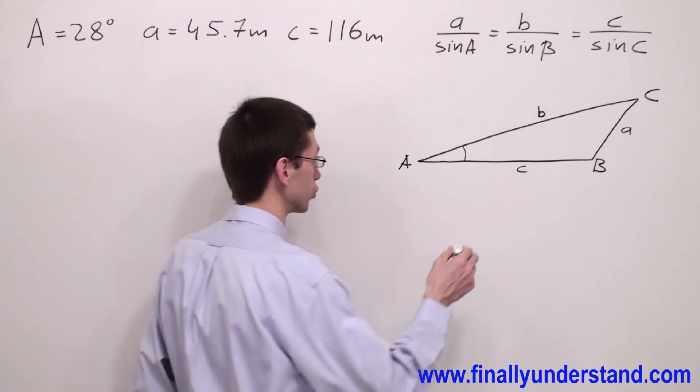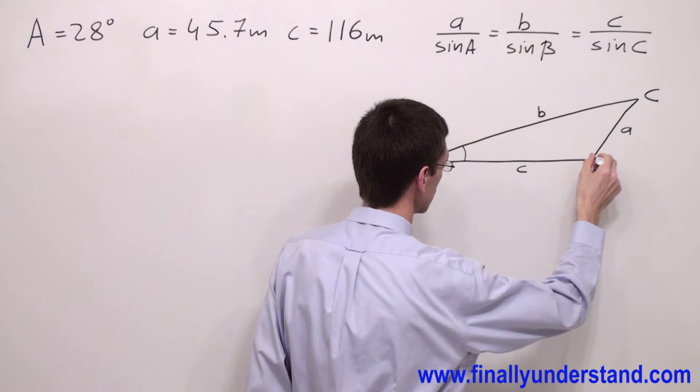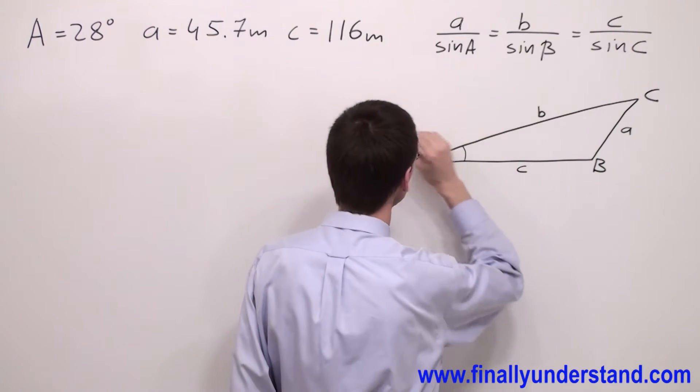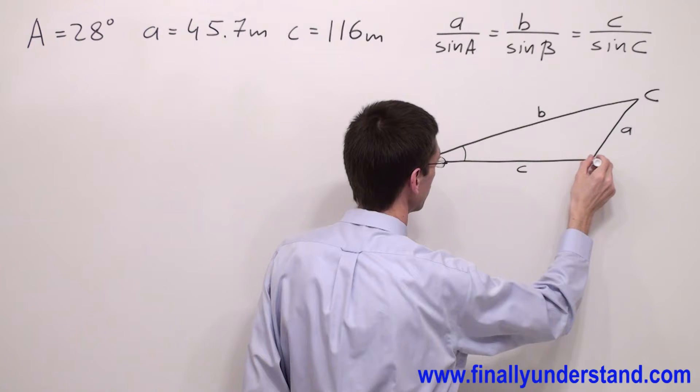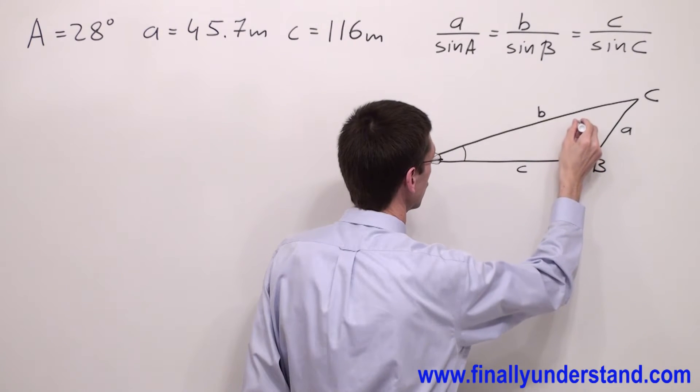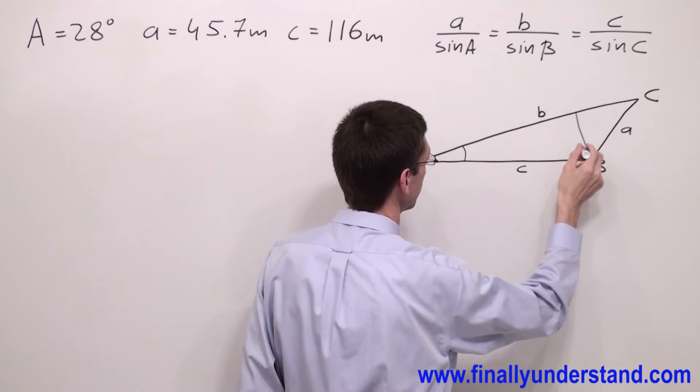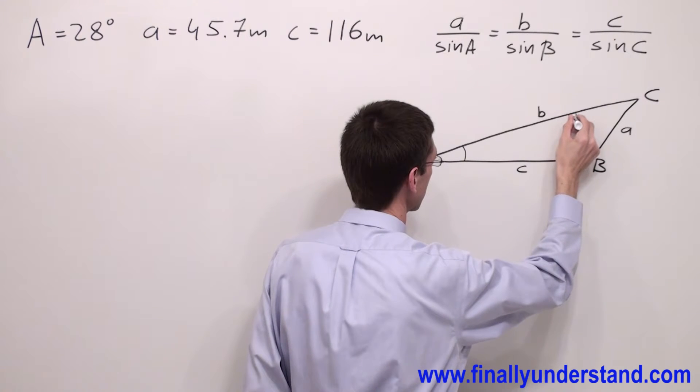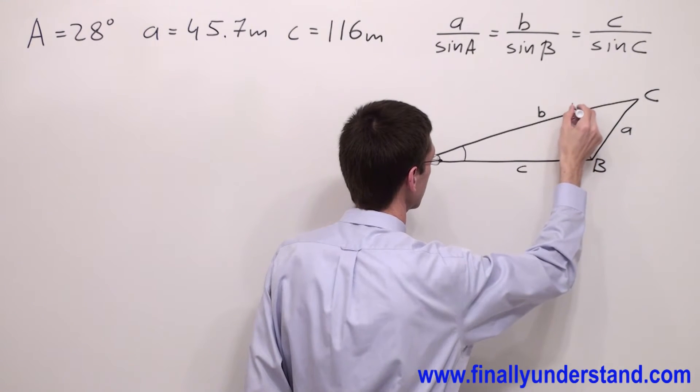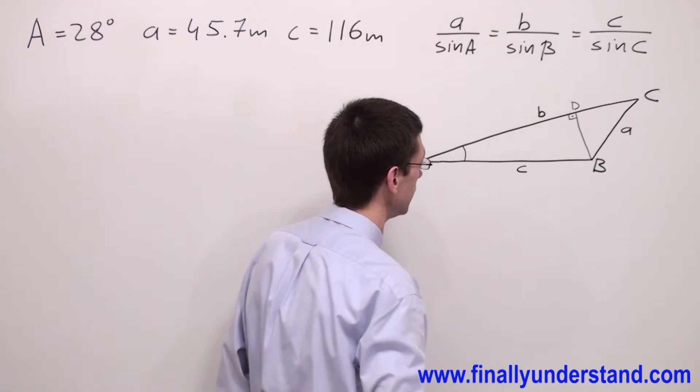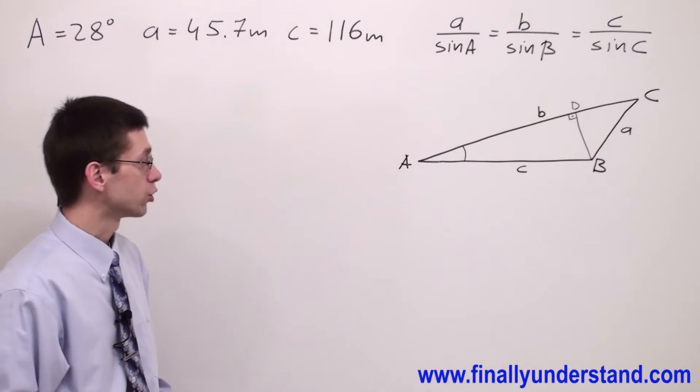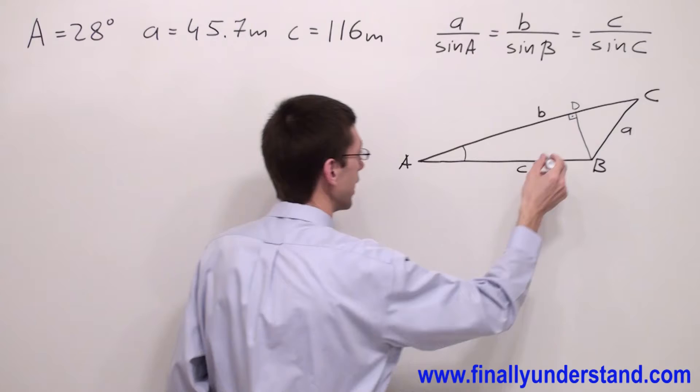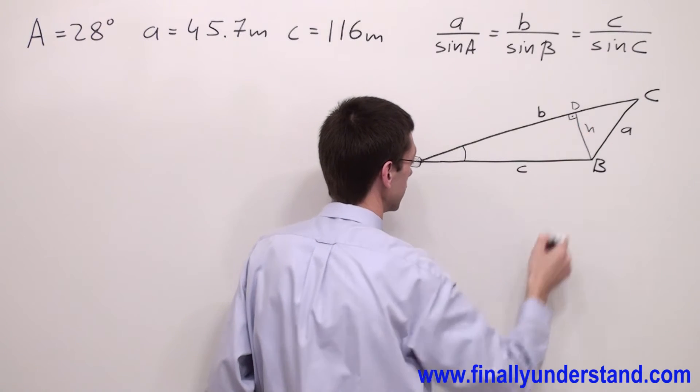Remember, we're supposed to always draw the altitude to the side which is not given. In our case, side B is not given, that's why I'm going to draw the altitude to side B, and this is a right angle over here. I'm going to call this angle D. So what I'm supposed to do is find the length of the altitude.